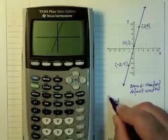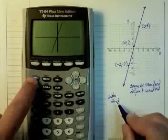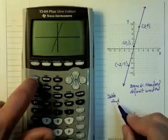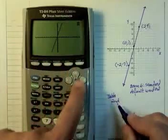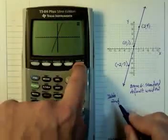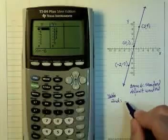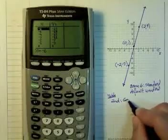So to get to the table, I'm going to press the second key, which gives me access to all of the blue functions. Table is right above graph, so I'm going to press that. And notice, so let me write this here, second graph will give me table.